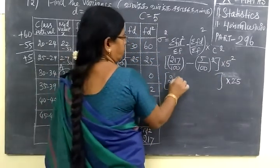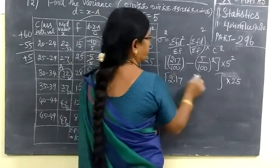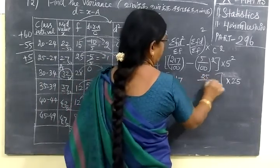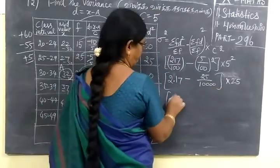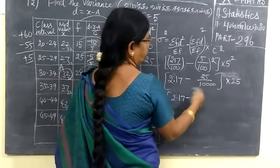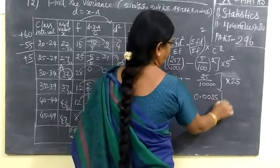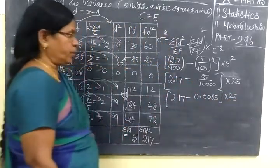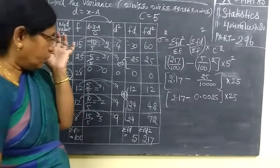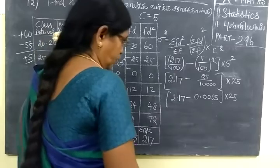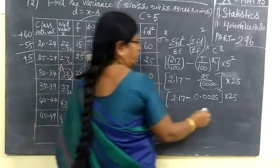So 2.17 minus, here 4 digits, so 0.0025 whole square. So 5 by 25 is 0.0025, then here 4, 0, then after 2 digits that is 4, 0.